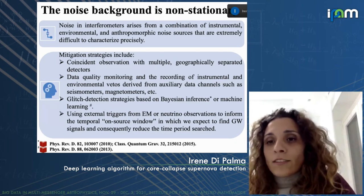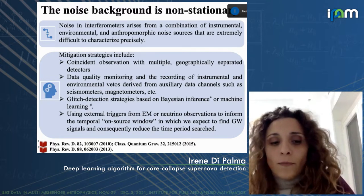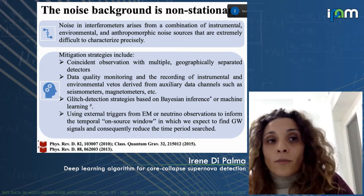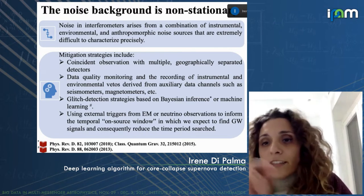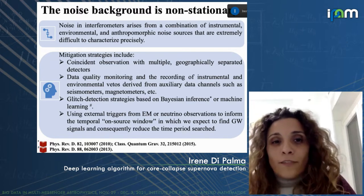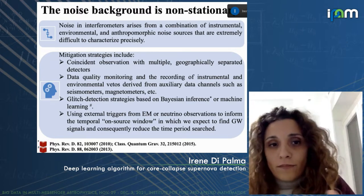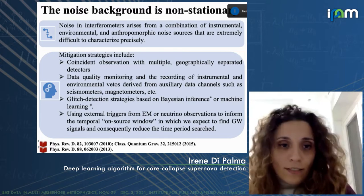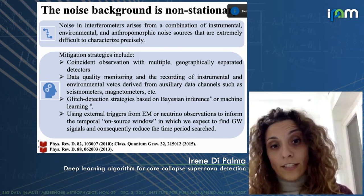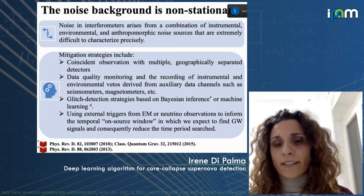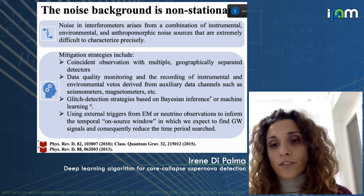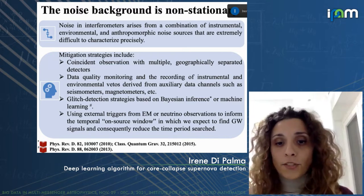Regarding noise, it is not only non-stationary but also non-Gaussian, so instrumental and environmental artifacts in the data can mimic the astrophysical signal we're looking for. To avoid this type of interference, we require coincident observations from all detectors in data taking, data quality monitoring and recording of environmental channels. We have strategies for glitch detection using both machine learning and Bayesian inference. In addition, we can use external triggers from electromagnetic or neutrino observations to reduce the time period to search on.